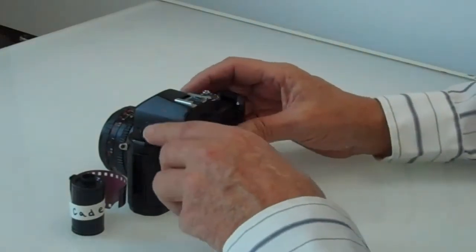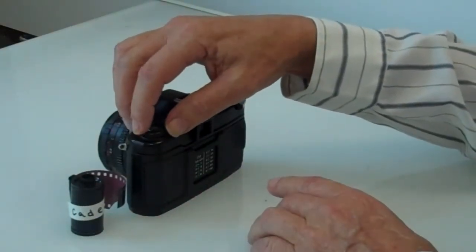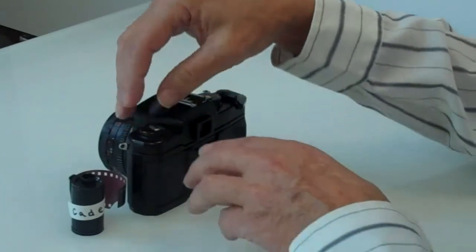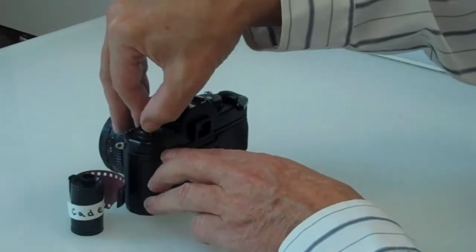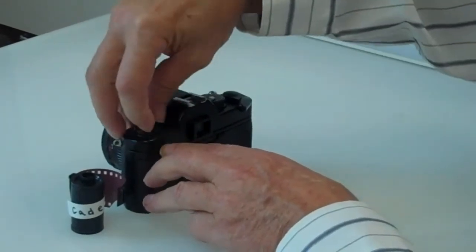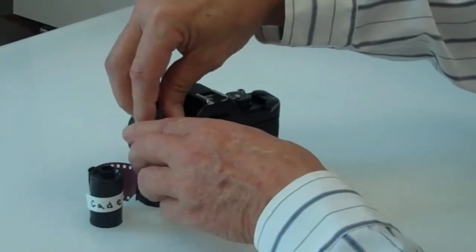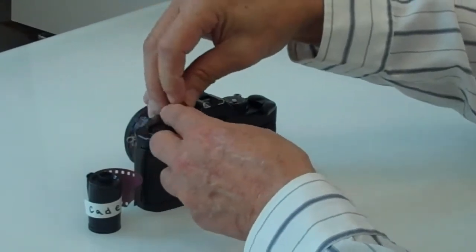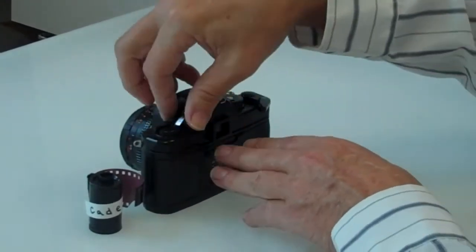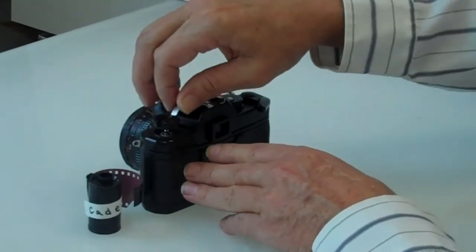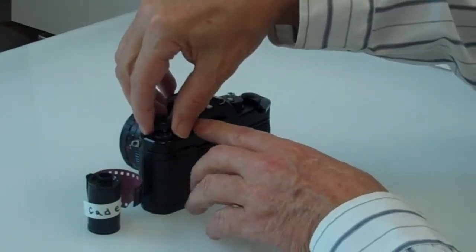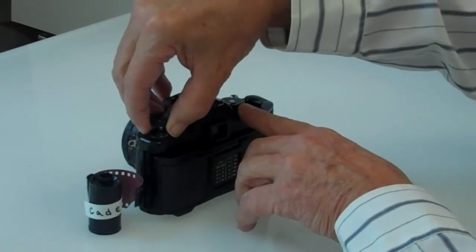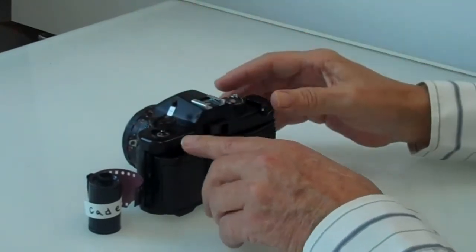The next thing you want to do is learn how to open the camera. The best way is to take this little handle right here, this little lever, kind of slide it out like that. Take the knob and pull it straight up all the way like that and your camera will open.